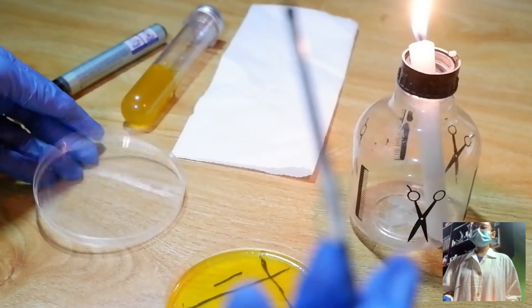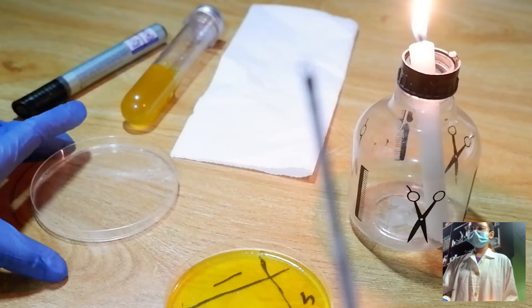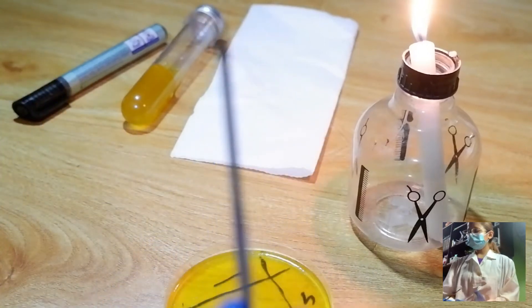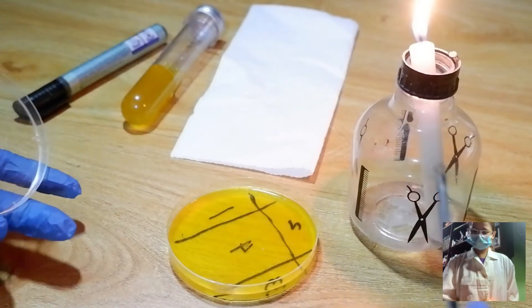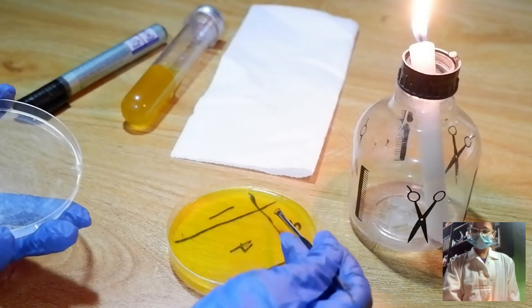Now, I will spread the organisms by streaking 5 to 6 streaks from area 1 to 2. This is our area 1 to 2.